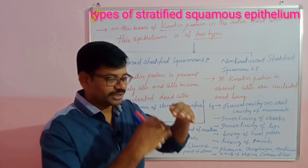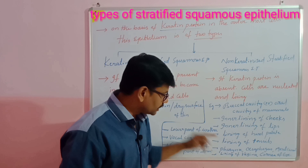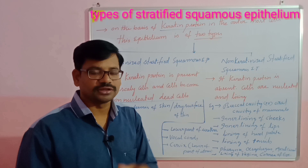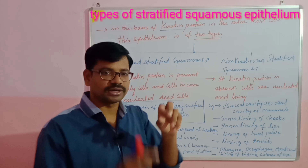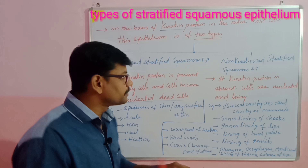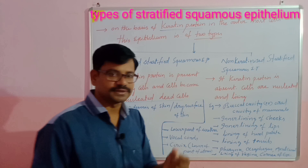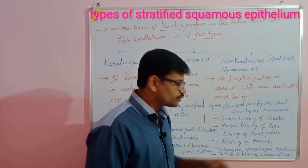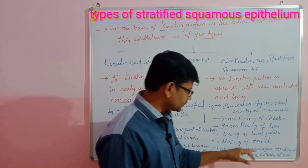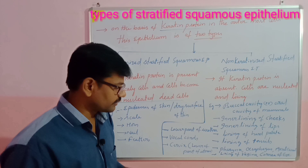The lining of tonsils — the lymphoid organs present in the oral cavity, forming Waldeyer's ring — are also lined by non-keratinized stratified epithelium. The pharynx, which is a common passage for food and air, and the esophagus, a continuation of the digestive system, are also lined by it. Additionally, the anal canal, the last part of the digestive system, is lined by non-keratinized stratified epithelium.